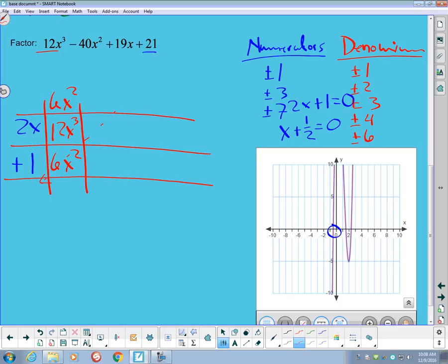And if I am going to divide by 2x plus 1, again, I know that my first square here has to give me a 12x³. And if I have got the 12x³ there, then that must mean this was a 6x². So that also makes this a 6x².